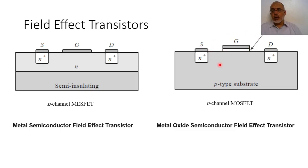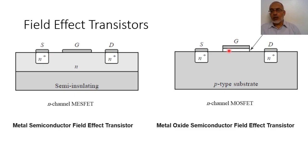The MOSFET configuration is more suitable for higher power and more suitable for digital applications. However, this configuration will have larger capacitance, and this larger capacitance will reduce the cutoff frequency. It will also require a more complicated fabrication process due to the silicon dioxide layer.